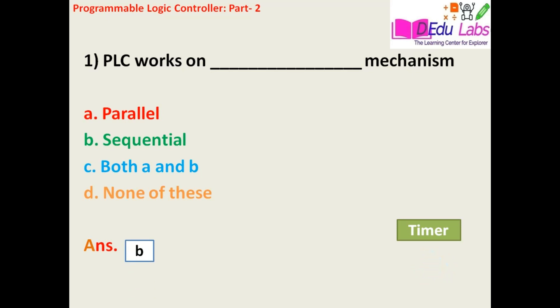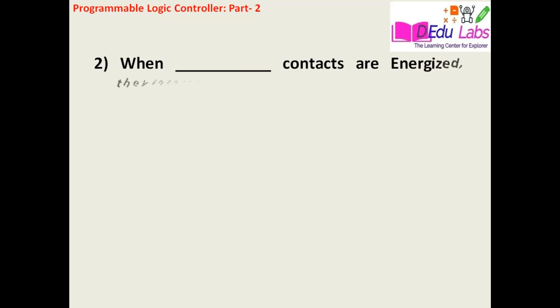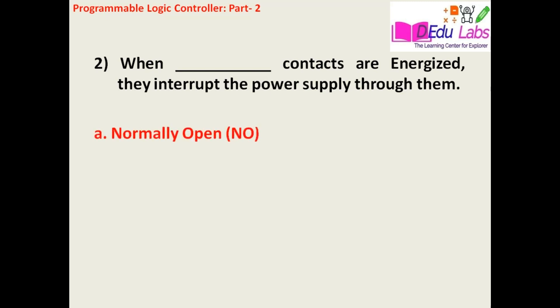Question number two: When blank contacts are energized, they interrupt the power supply through them. Option A is normally open, Option B is normally closed, Option C both A and B, and Option D none of these.